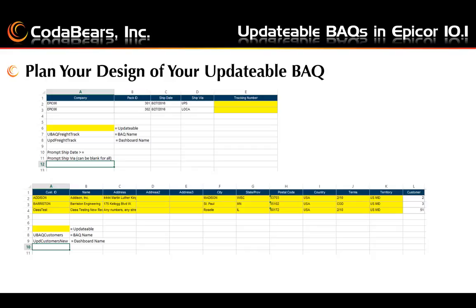The second example in the lower portion of the screen shows an updatable BAQ for adding a new customer record. Here all of the fields are going to be updatable except for the last column, which is the customer number. We show what we plan to name our updatable BAQ and dashboard. It's good to include examples of actual data in your plan so that if the IT person you're requesting this from does not know all the fields you need, they might be able to find what you're looking for.